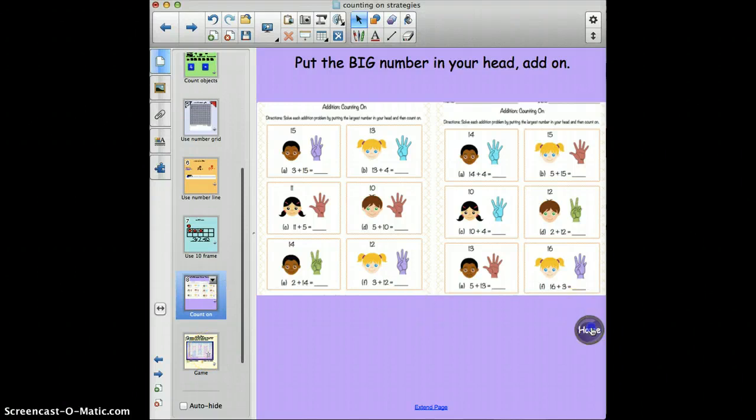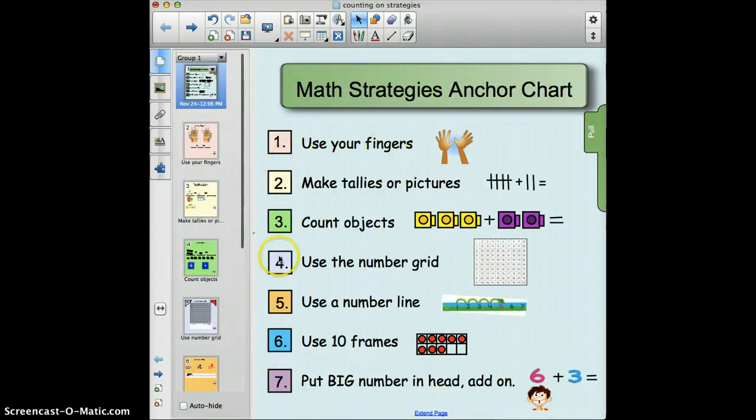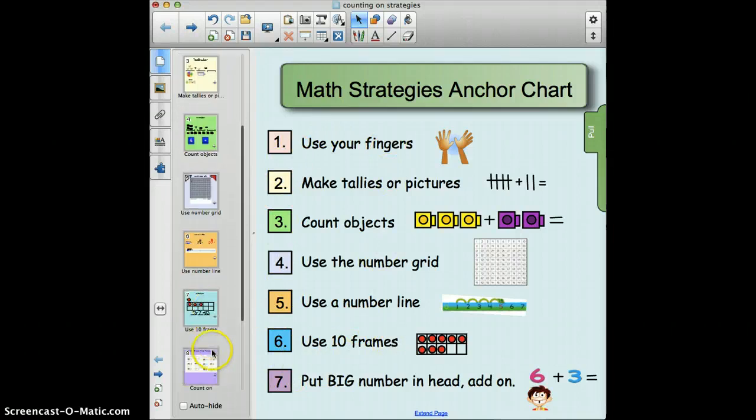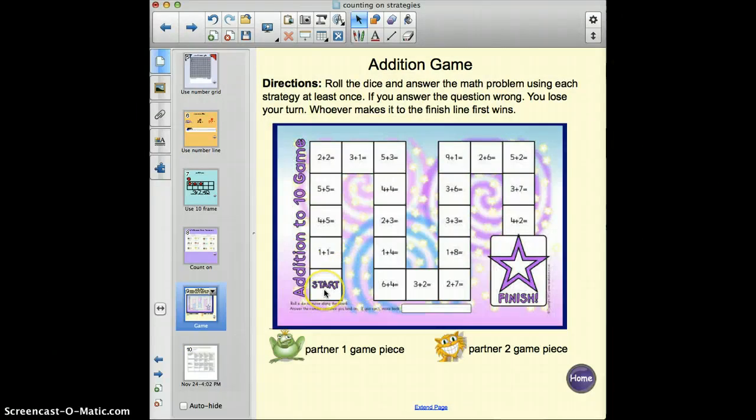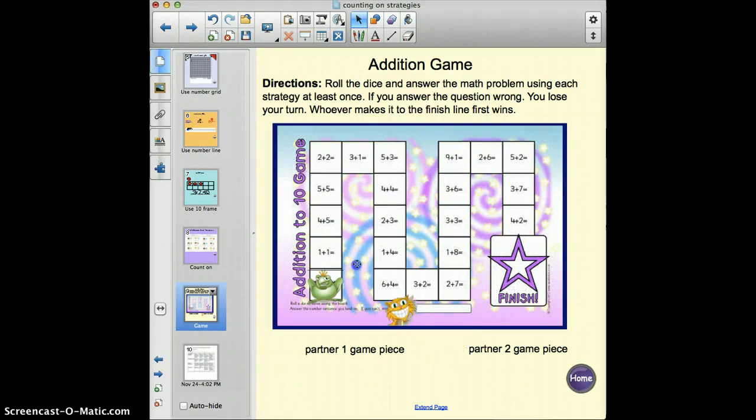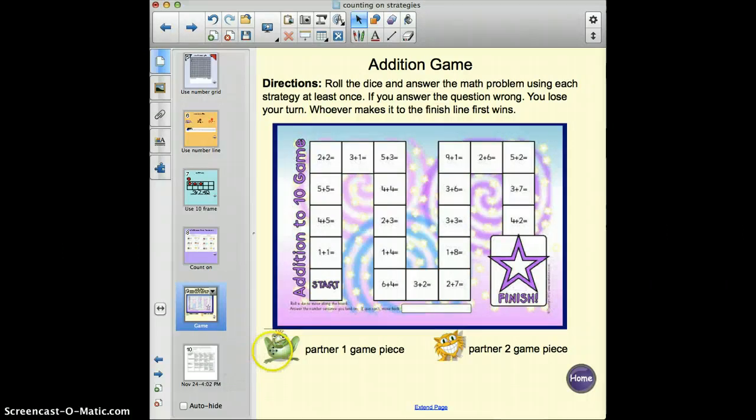Finally, those are all the strategies - all the different strategies and ways to get to them. But at the end of the lesson there's a game. In this game they start here and go all the way around to the finish at the end. The directions say roll the dice and answer the math row using each strategy at least once. If you answer the question wrong, you lose your turn. Whoever makes it to the finish line first wins. These are your little place markers, and you can roll the die which they would have in their hands. Say he rolled a two, so they would go to two and have to answer one plus one.